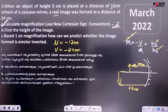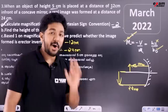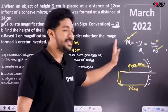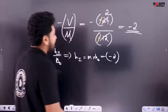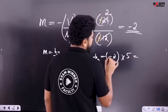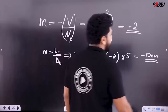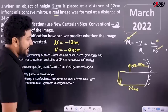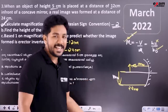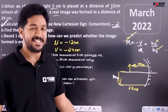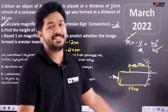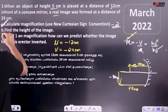The height of the object is 5 cm. h-O is positive 5 cm. So h-I equals minus 2 times 5. 5 times 2 is 10, so minus 1 gives minus 10 cm. The height of the image is minus 10 cm.